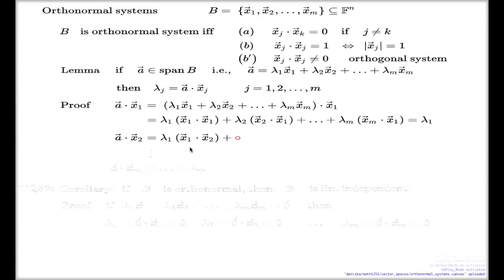λ₁ x̄₁ dot product x̄₂, λ₂ x̄₂ dot product x̄₂ plus dots plus the last one will be λₘ x̄ₘ dot product with x̄₂. And again, in this expansion, every bracket except for the second one will vanish due to the assumption a here. And the second bracket, in fact, will be just unity due to the assumption b. And so the whole thing just becomes λ₂.